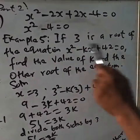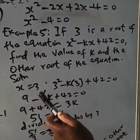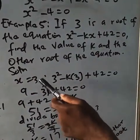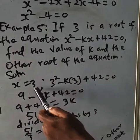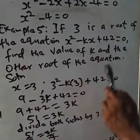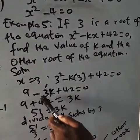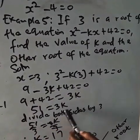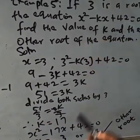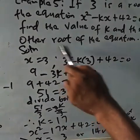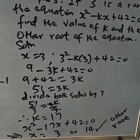Example 5: if 3 is a root of x squared minus kx plus 42 equals zero, find the value of k and the other root. Since 3 is a root, substituting x equals 3 gives 9 minus 3k plus 42 equals zero. So 9 plus 42 equals 51, and 51 equals 3k, giving k equals 17. Substituting back: x squared minus 17x plus 42 equals zero. Factorizing gives x equals 3 or 14, so 14 is the other root.